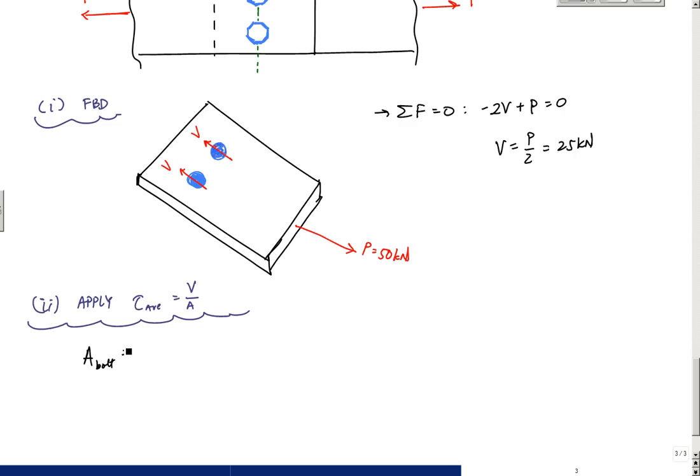The diameter is 19 millimeters, so I have pi over 4 times 19 millimeters squared, and here the cross sectional area of my bolt is 283.53 millimeters squared.